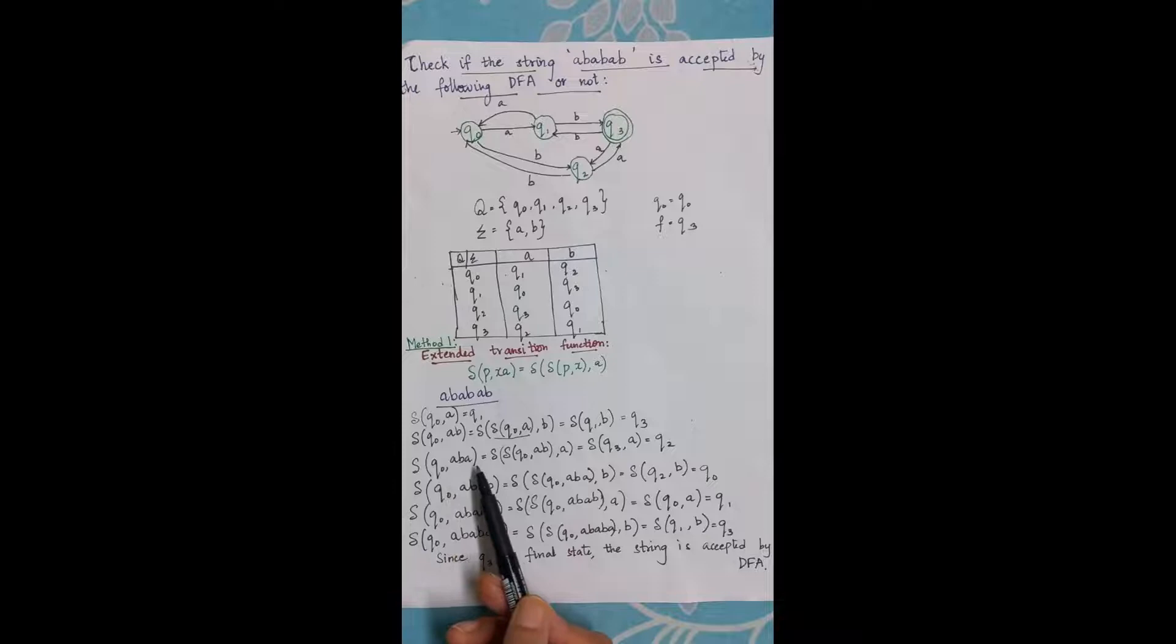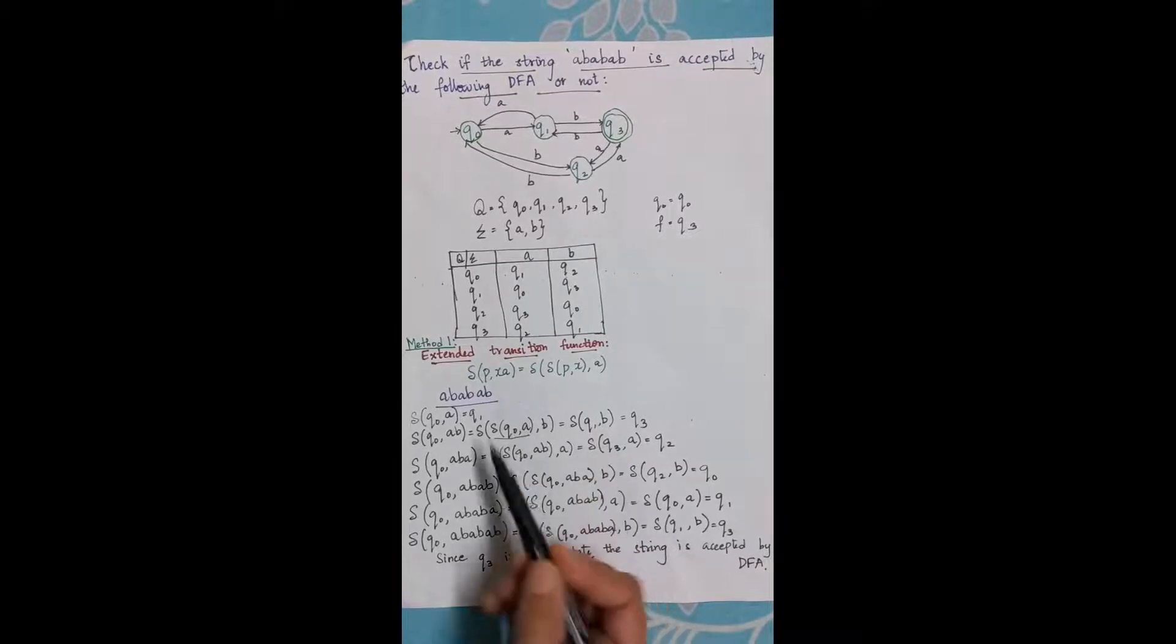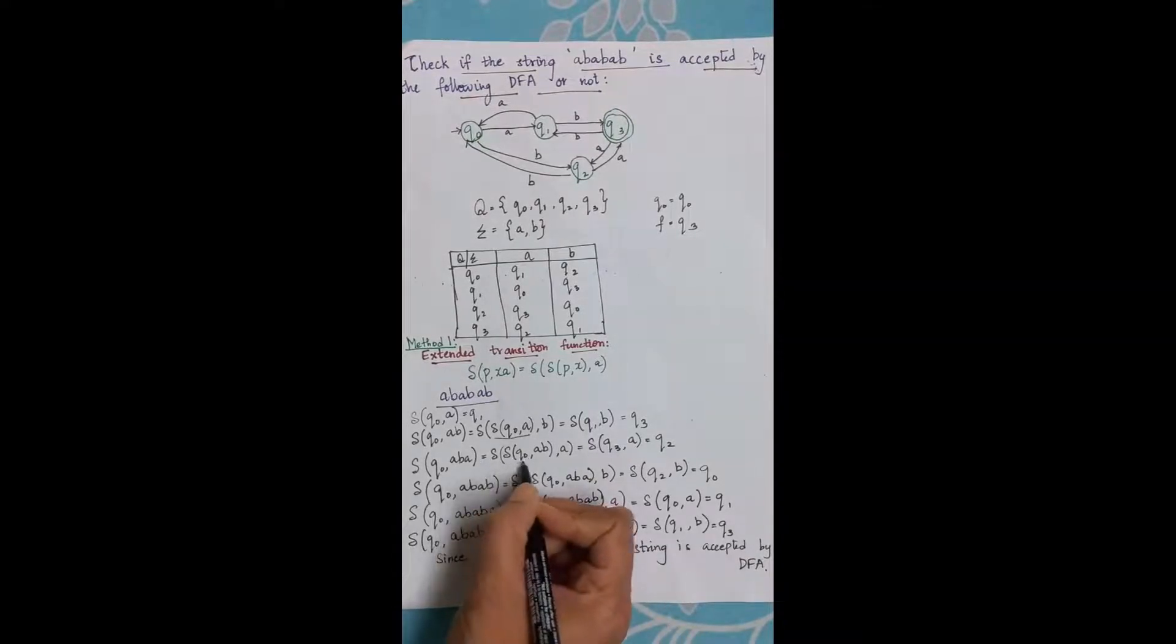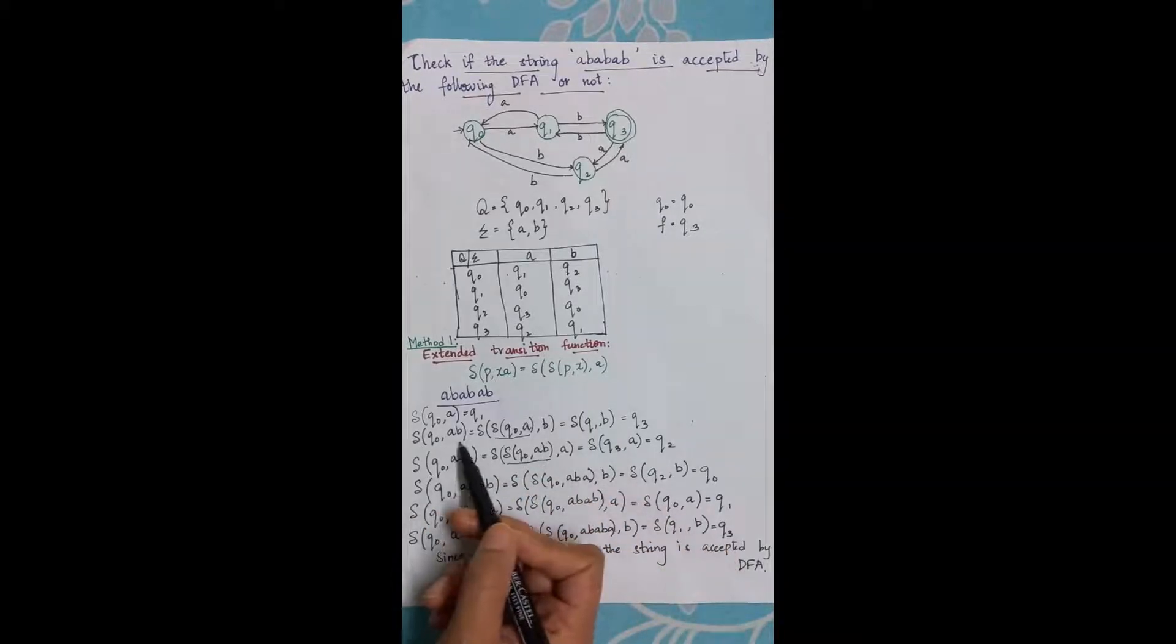Q0 comma aba is equal to delta of delta of q0 comma ab comma a. That is equal to delta of, now this I derived in my previous line and I know that this is nothing but q3.